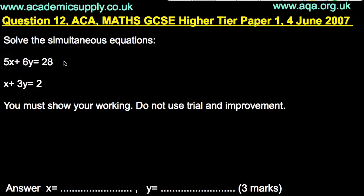Hello, my name is Stephen and I'm from academicsupply.co.uk. We're looking at question 12, ACCA Maths GCSE Higher Tier Paper 1, June 4th. We're looking at some algebra. It says solve the simultaneous equations: 5x plus 6y equals 28, and x plus 3y equals 2.